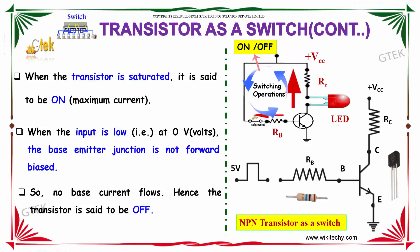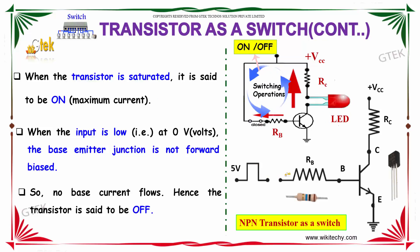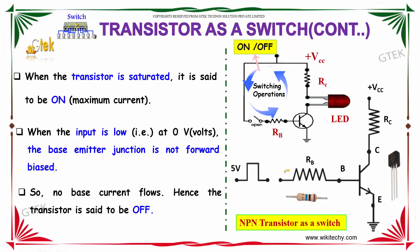When the input is low, at 0V, the base and the emitter are not forward biased. So there is no base current flowing, hence the transistor is said to be OFF.